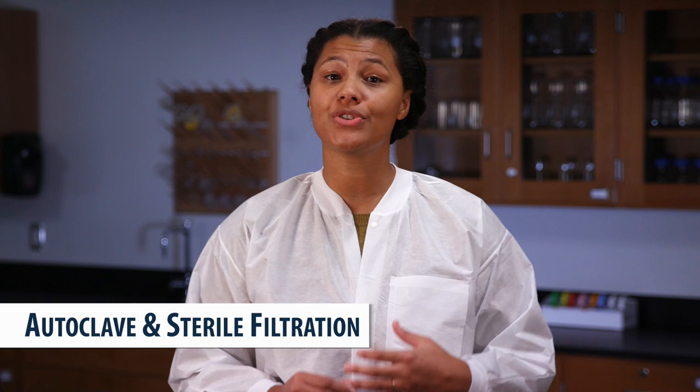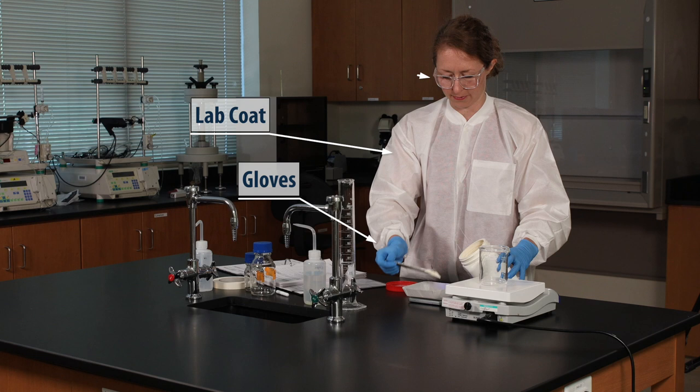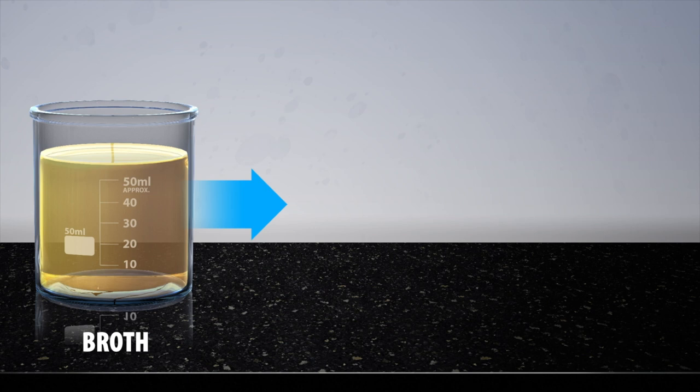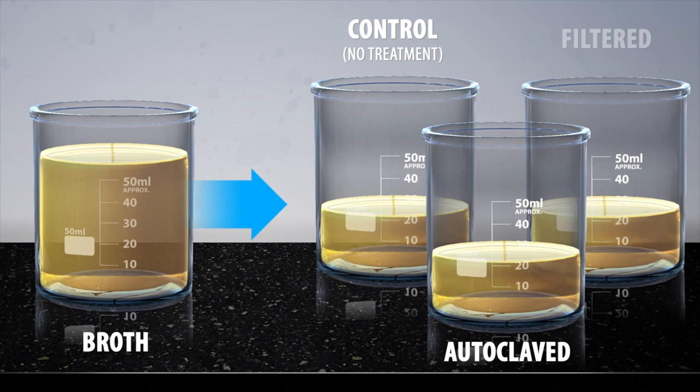Always be sure to wear your PPE, lab coat, gloves, and safety glasses. First, we're going to make a microbial growth medium that will split into three fractions. One sample will be our control. The second will go to the autoclave and we'll use sterile filtration on the third. Then we can check each sample for contamination and compare the results.